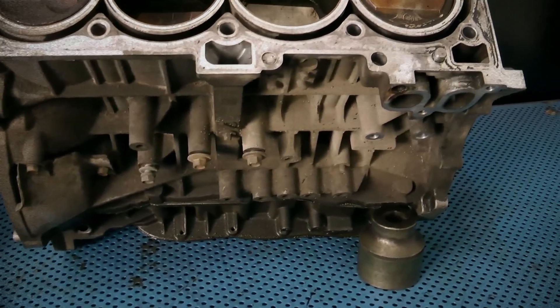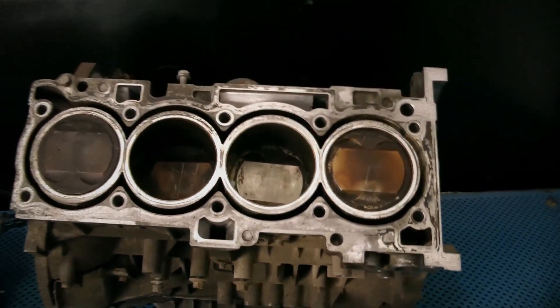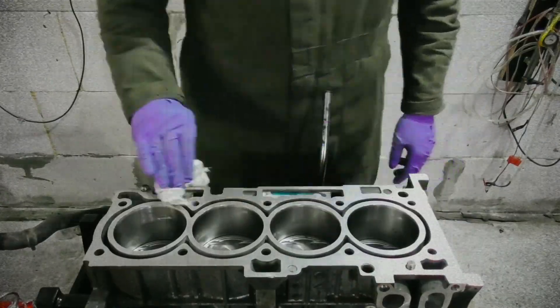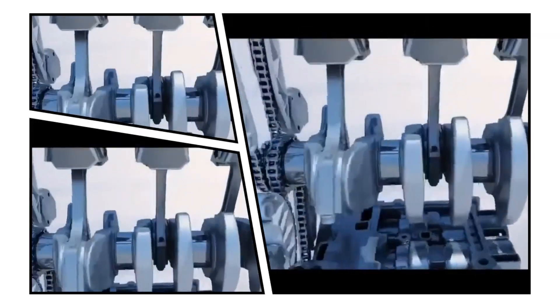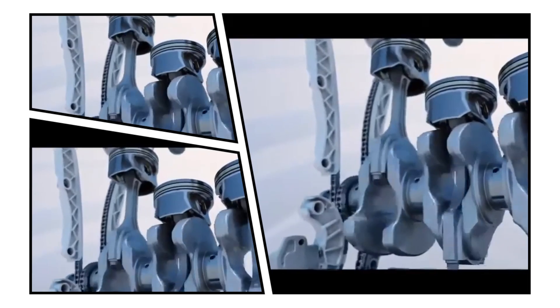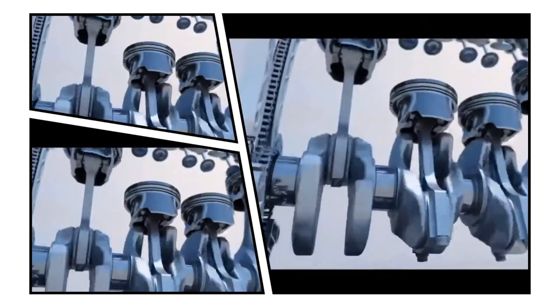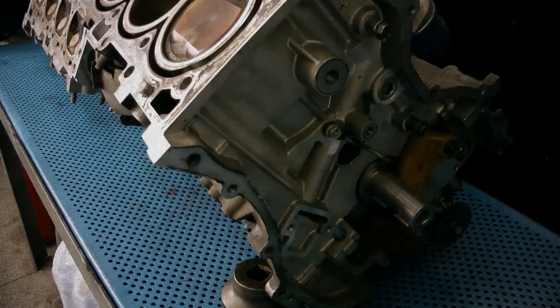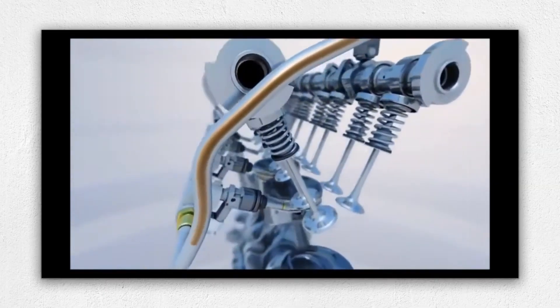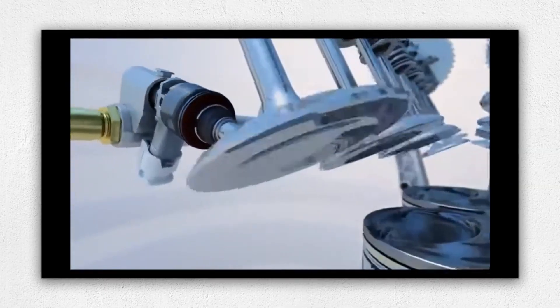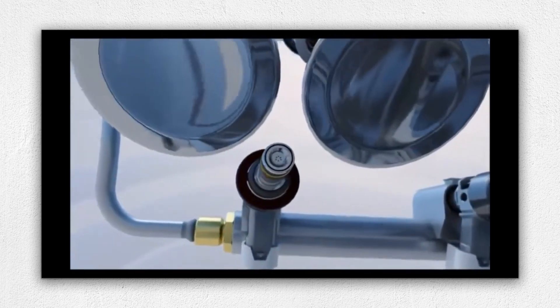The open-deck aluminum block uses cast iron cylinder liners, a 97mm stroke forged steel crank and 88mm pistons to reach 2,359 cubic centimeters. Balancer shafts tame vibration, while piston cooling oil jets added during mid-cycle updates reduce skirt temperatures.